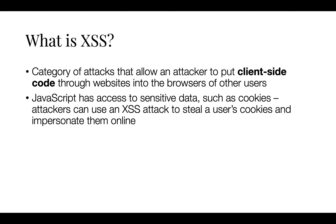Essentially, an attacker can attach code to a legitimate website that executes when a potential victim loads the website. The most popular ways for this attack to occur are malicious code added to the end of a URL, or posted directly onto a page that displays user-generated content. For example, it is commonly seen on websites that have unvalidated comment forms.